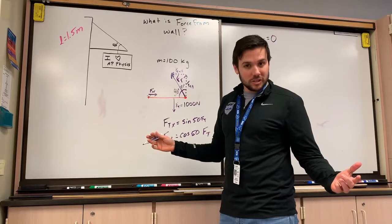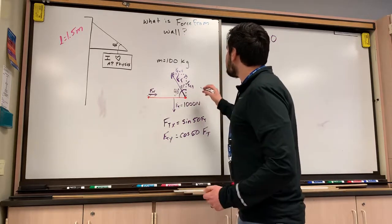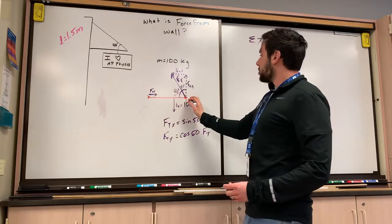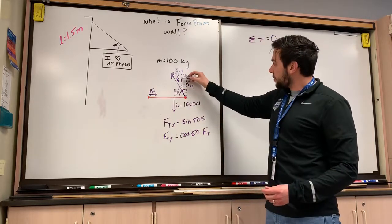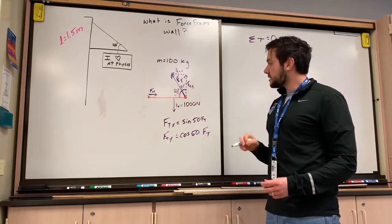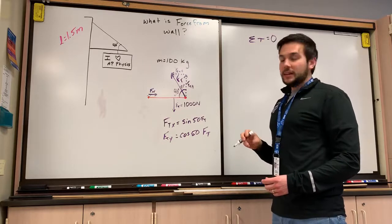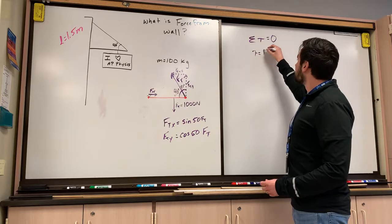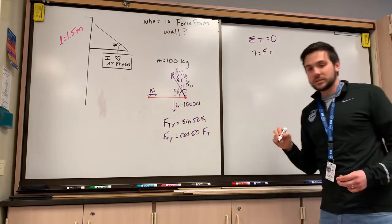The nice thing about this normal force from the wall is that it's acting on its axis of rotation. It's not supplying any torque whatsoever. So we can say, well, the only two torques are going to be coming from this tension and this tension from the sign. And we calculate our torque by doing force times radius.